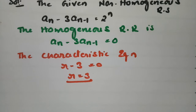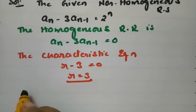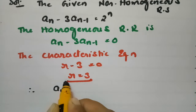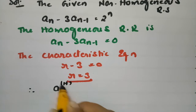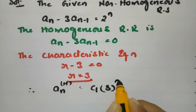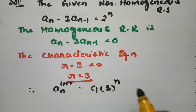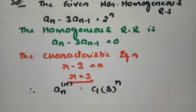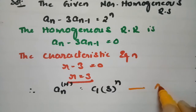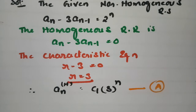Therefore, the homogeneous solution is a_n(h) = c1·3^n. Note that the homogeneous solution involves 3^n, while the right-hand side involves 2^n, so we proceed to find the particular solution.